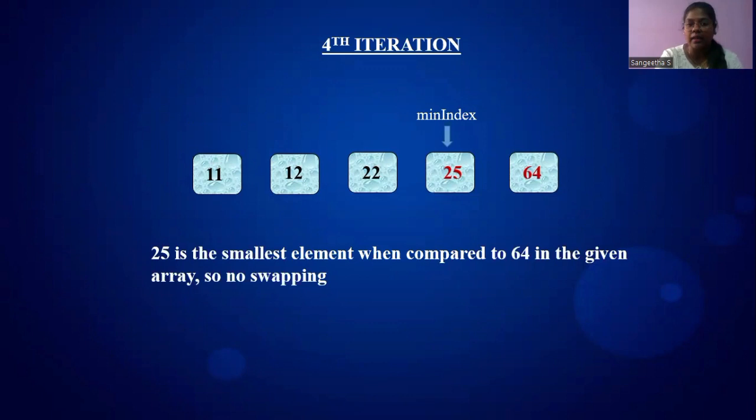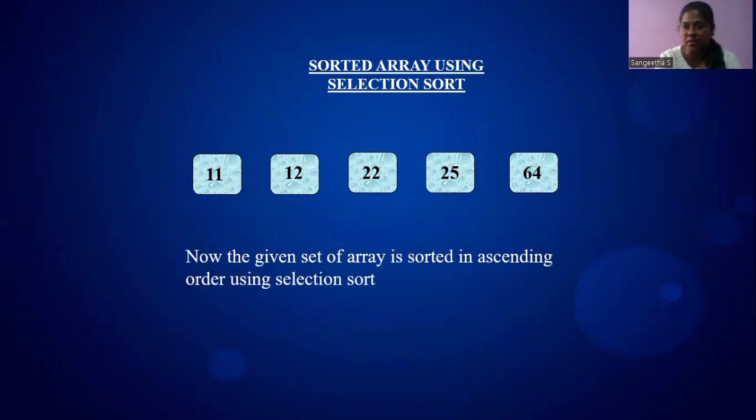Now the given elements are sorted. There were totally 4 iterations during the selection sorting. So 11, 12, 22, 25, and 64 are the array elements sorted using selection sorting. Basically, sorting is always in ascending order. Wherever we specify descending order, the array will be sorted in descending order, but by default the array is sorted in ascending order. This is the easiest way of sorting an array using selection sort.